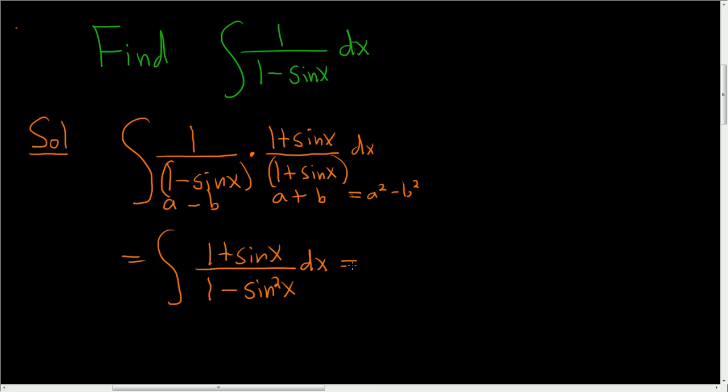And so this is equal to 1 plus sine x divided by, now sine squared x plus cosine squared x is equal to 1. So cosine squared x is equal to 1 minus sine squared x. So we can make this replacement, so this is cosine squared x dx.